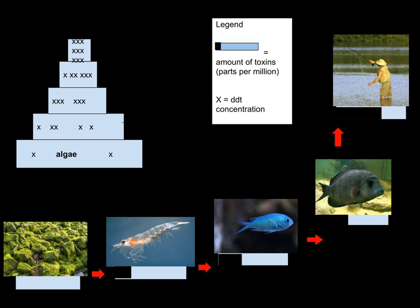Biological magnification often refers to the process whereby certain substances such as pesticides or heavy metals work their way into lakes, rivers and the ocean, and then move up the food chain in progressively greater concentrations as they are incorporated into the diet of aquatic organisms such as zooplankton, which in turn are eaten perhaps by fish, which then may be eaten by bigger fish, large birds, animals, or humans. The substances become increasingly concentrated in tissues or internal organs as they move up the chain.